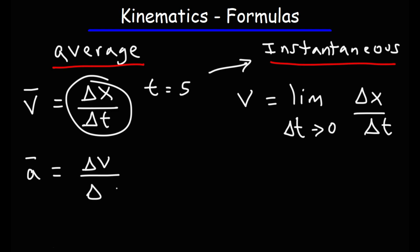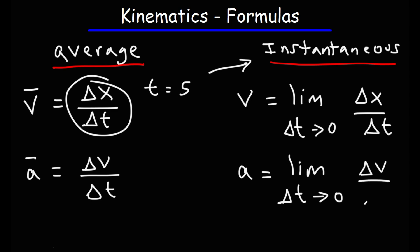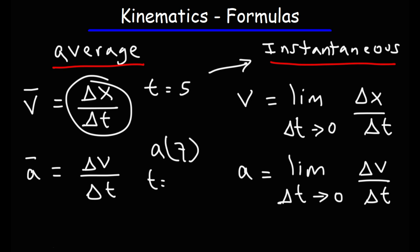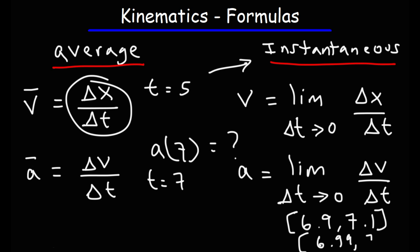Similarly, instantaneous acceleration is the limit as delta t approaches zero of delta v over delta t. To calculate the instantaneous acceleration at t equals 7, using an interval of 6.9 to 7.1 gives a good approximation. Using 6.99 to 7.01 as t-initial and t-final is an even better approximation. The closer delta t gets to zero, the better the approximation.